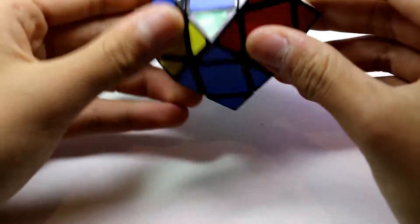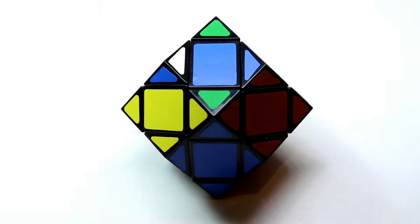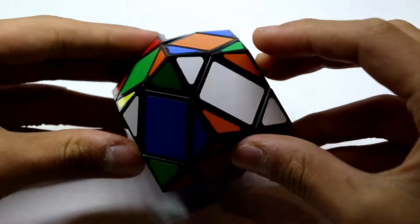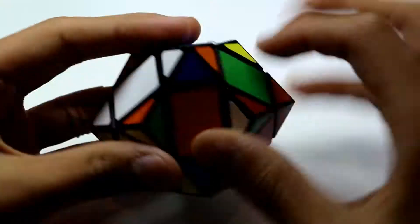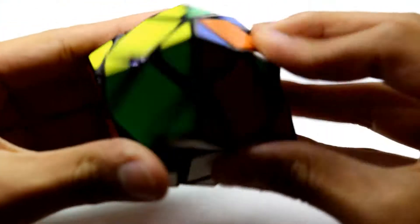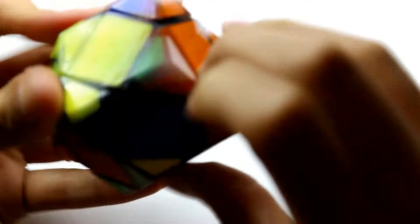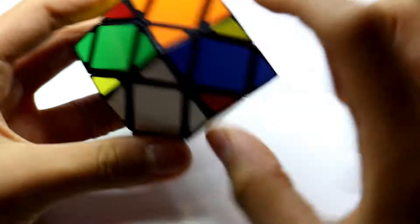We insert the red in and then we insert this yellow in just like that. Now what we can do is we have to look at it this way so that the one that is solved is on your left and the algorithm. Now we have our cross solved.